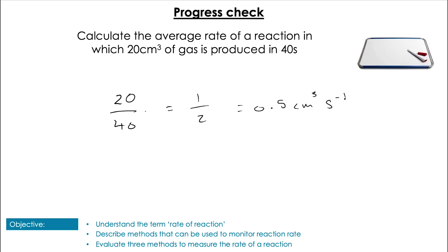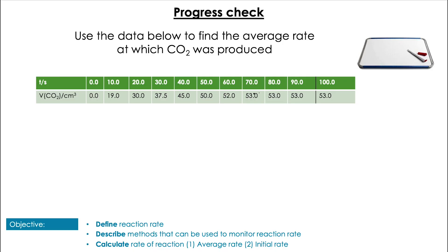In this question, you're going to use this data to find the average rate at which CO2 was produced. Pause the video and have a go. Pop them up! The key with this one is seeing that after 70 seconds, the reaction ends and we get no further volume change. So the average rate of reaction, we're going to calculate from the point at which the reaction ends. We're going to do 53 divided by 70, which equals 0.757 centimeters cubed per second.